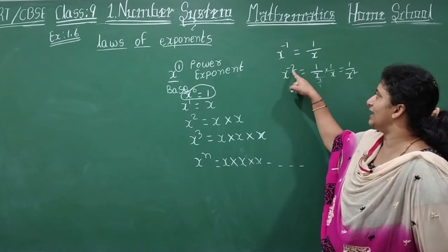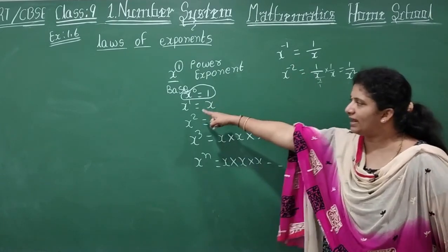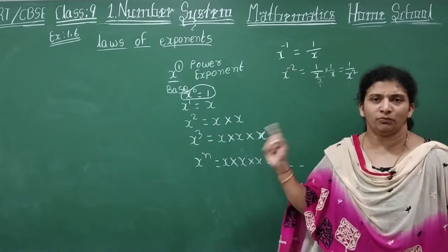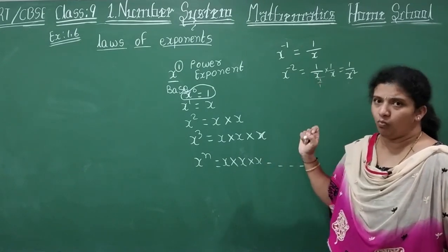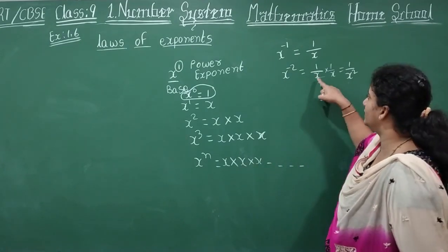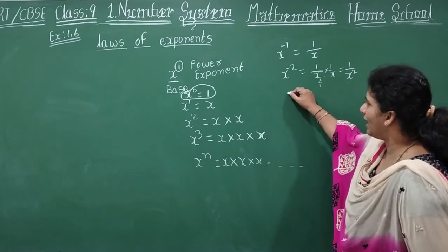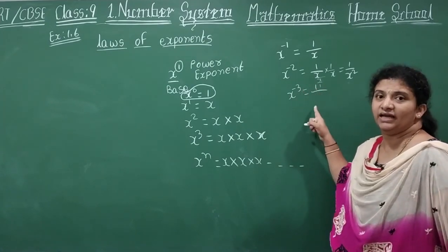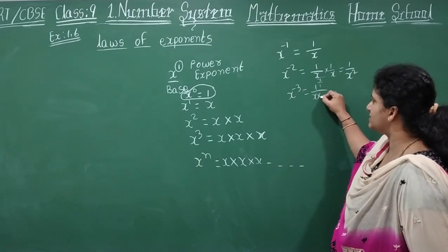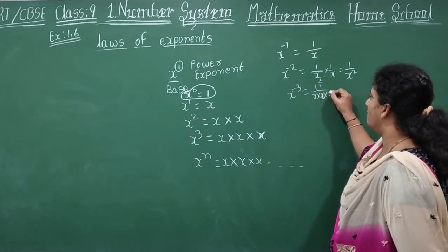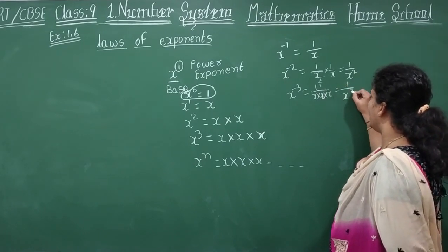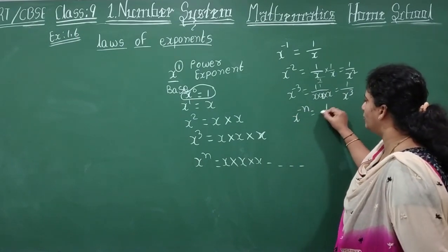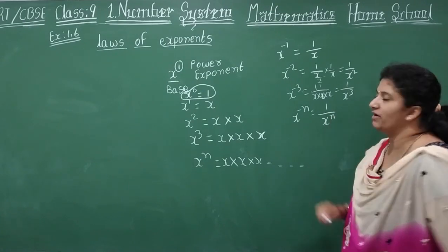So observe here, children — why I am writing it like this. Whereas with a positive power you directly multiply, if you have any negative power you keep dividing for 1. When you divide in the denominator, these are multiplied. So if you have X power minus 3, how do you write it? Three times X is multiplied in the denominator: 1 by X into X into X, or 1 by X cube. Similarly, X power minus n is written as 1 by X power n.